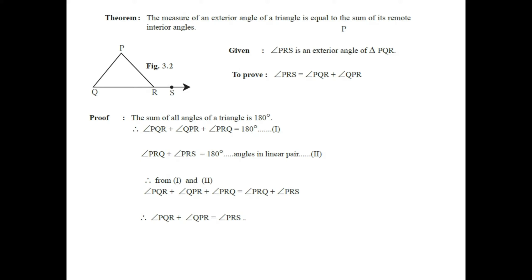That is what we had to prove. This completes the proof of the theorem: the measure of an exterior angle of a triangle is equal to the sum of its remote interior angles. Now let us consider another concept studied earlier — congruent triangles.